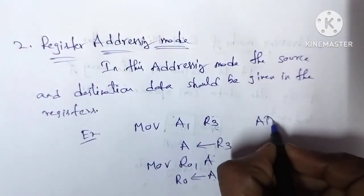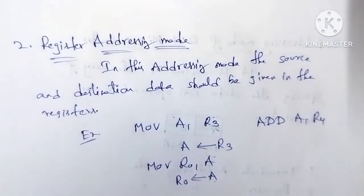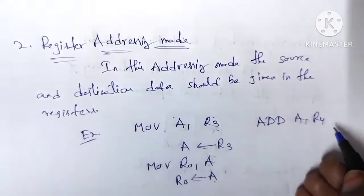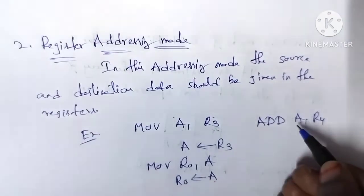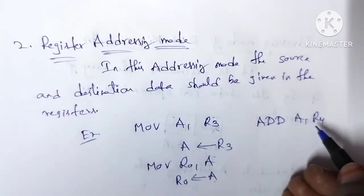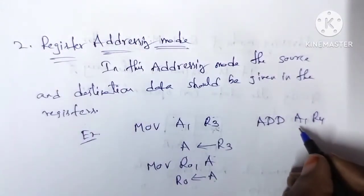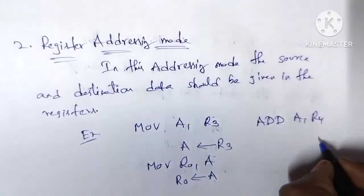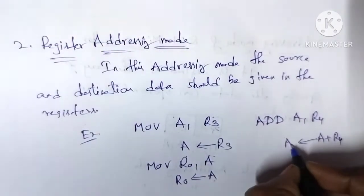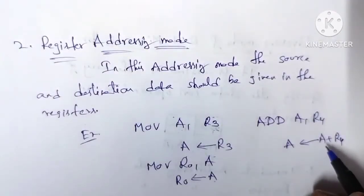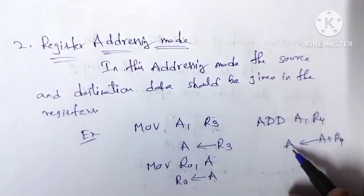Next example: 'ADD A, R4'. In register addressing mode, the source and destination are both registers. ADD A, R4 means the content of R4 is added to the accumulator, and the result is stored in the accumulator. This is register addressing mode — both source and destination are in registers.